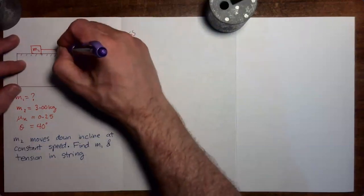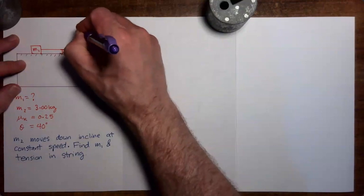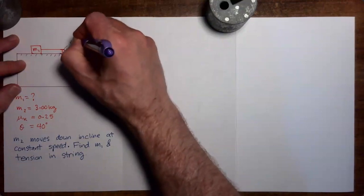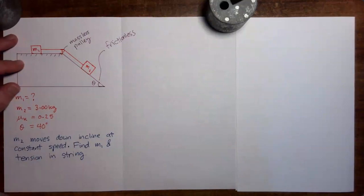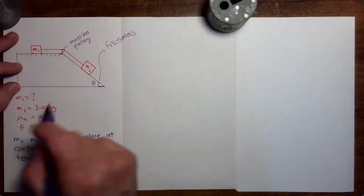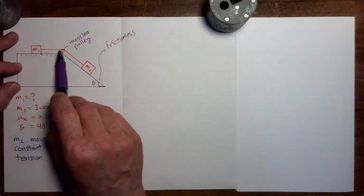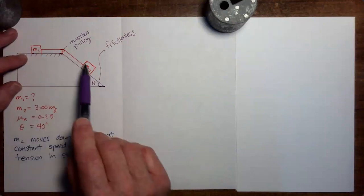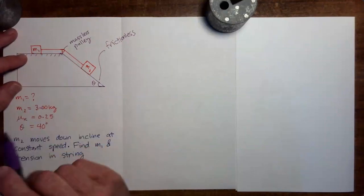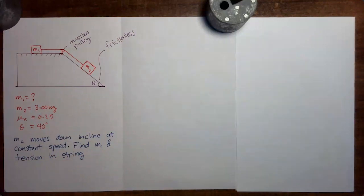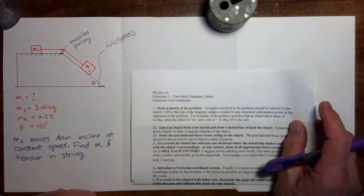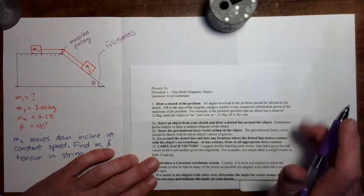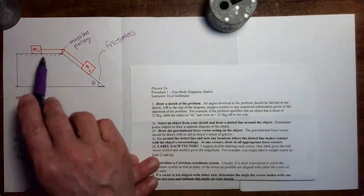We're going to assume that this is a massless pulley. By assuming a massless pulley, we can assume constant tension throughout the string, which allows us to focus our analyses on mass 1 and mass 2 without worrying about the pulley's effects. We're going to solve this problem using the same handout we've been using to apply the first condition of equilibrium, but this time applying the process separately to mass 1 and to mass 2.